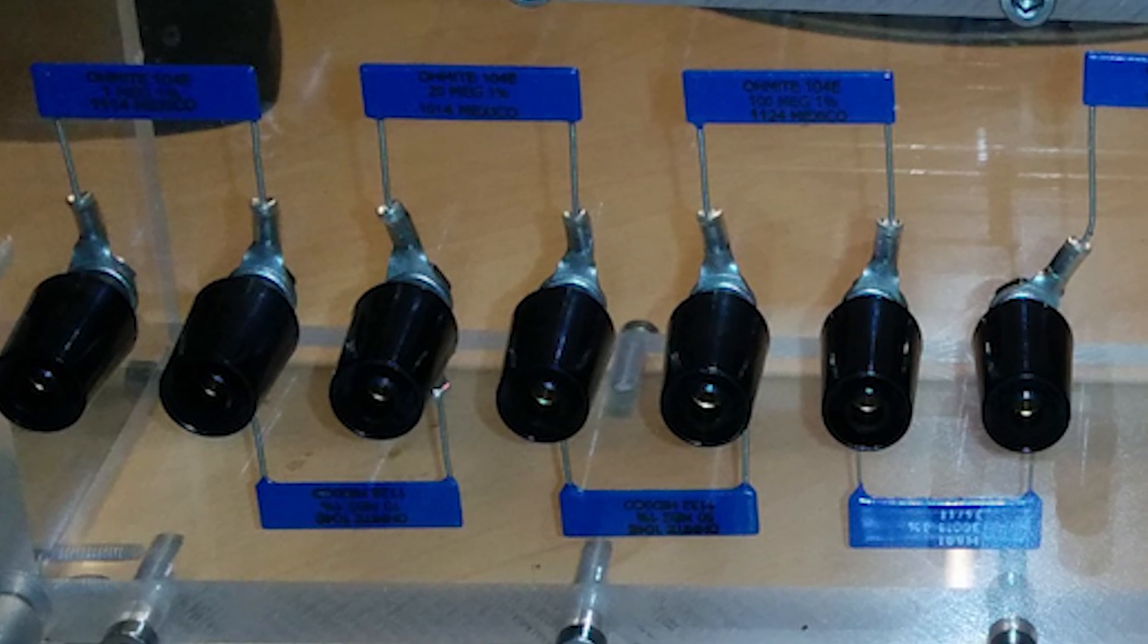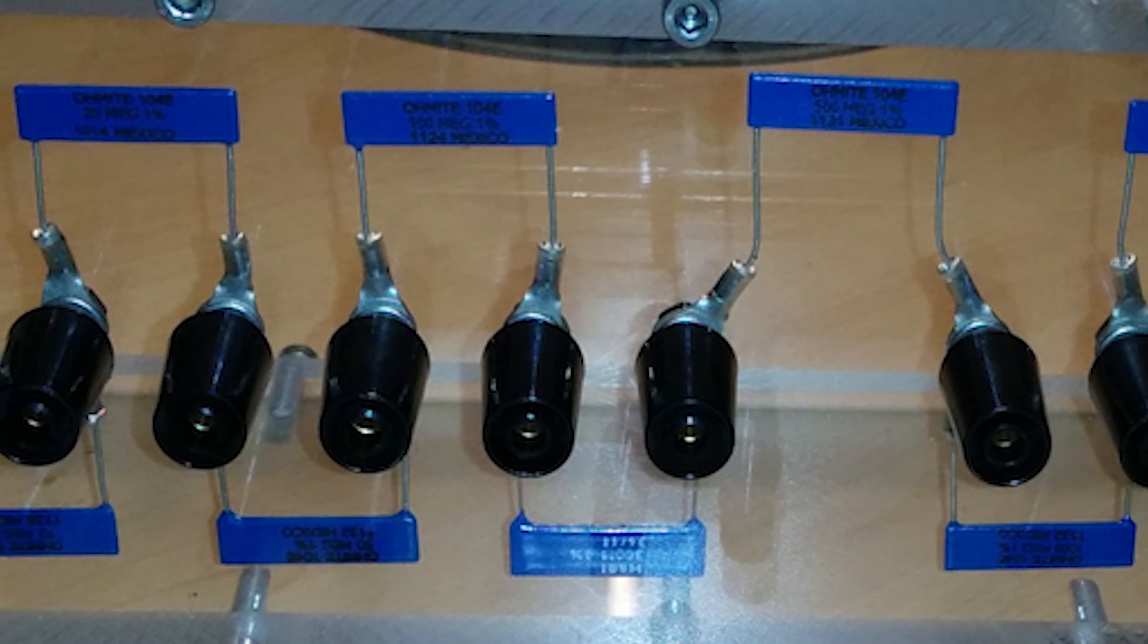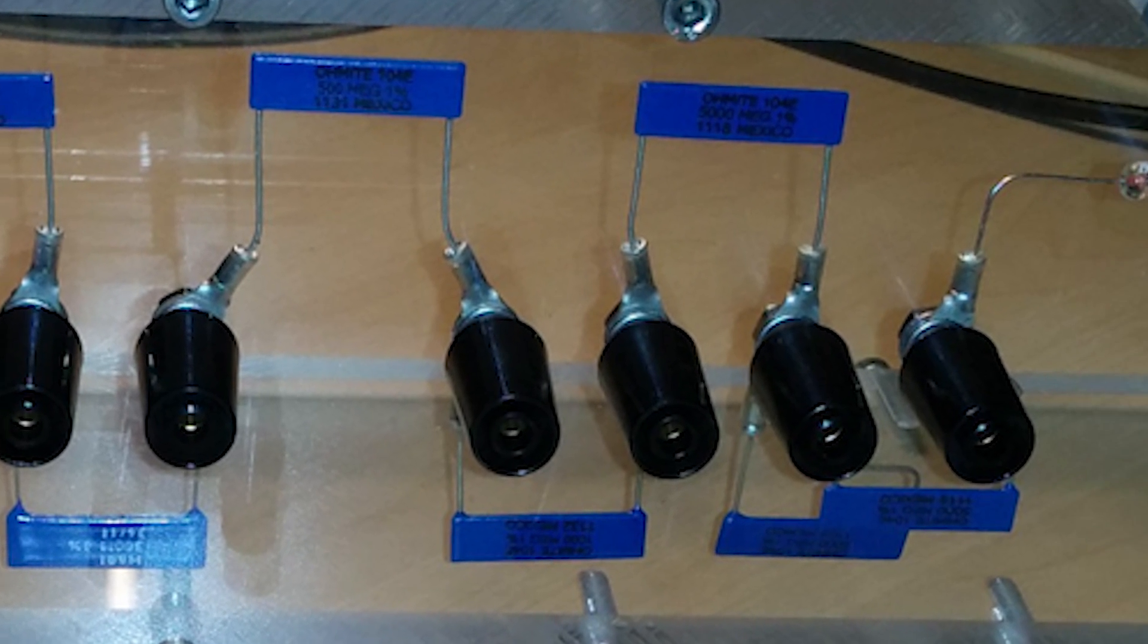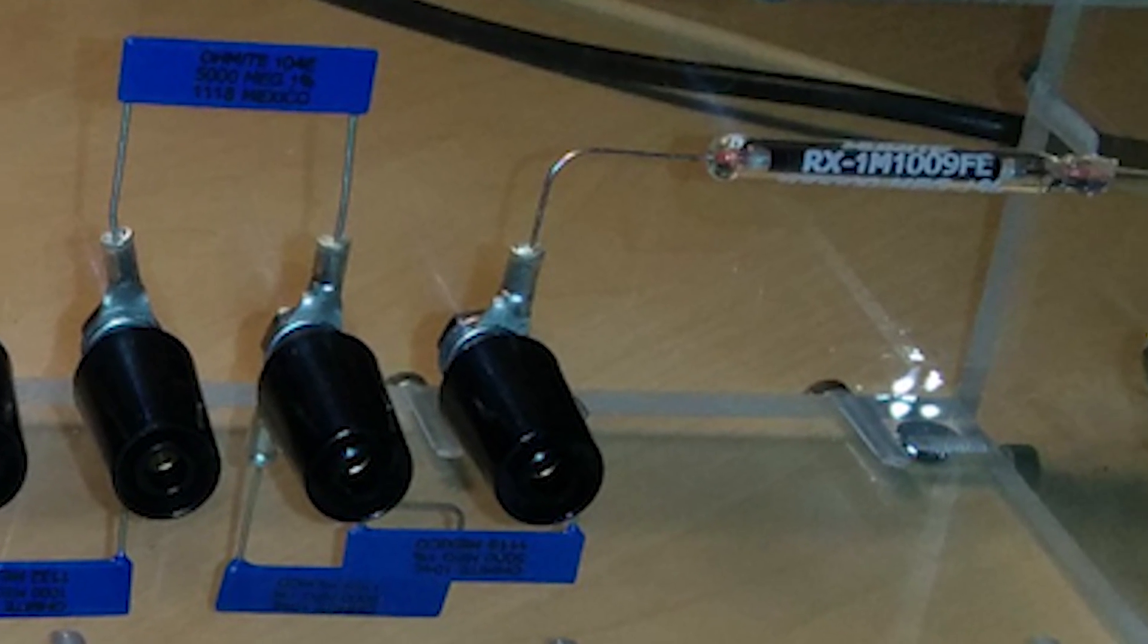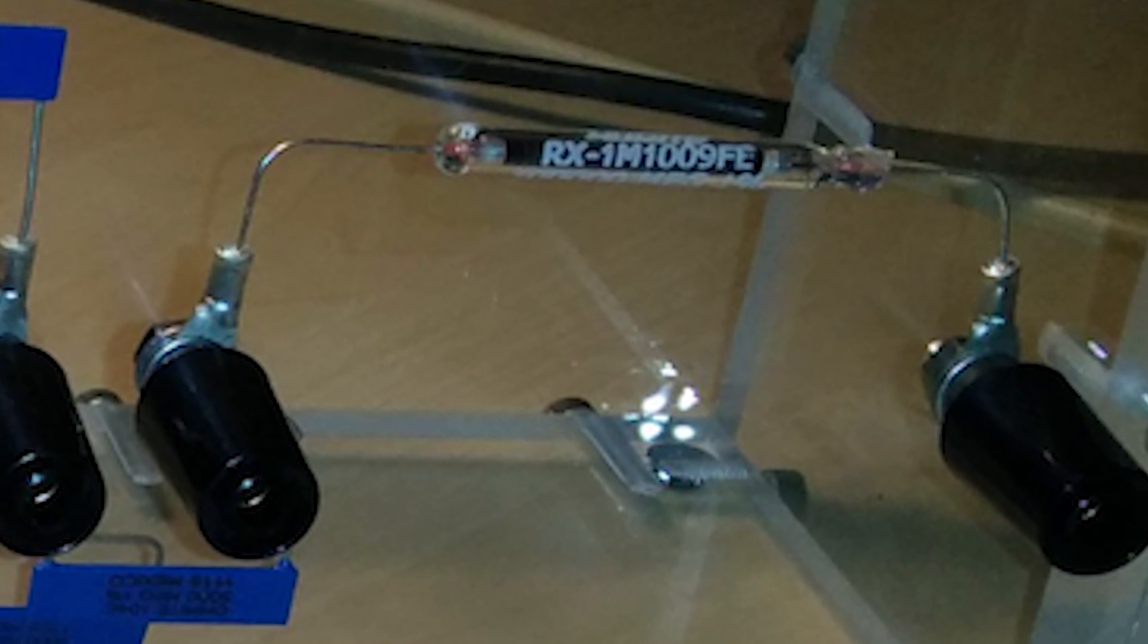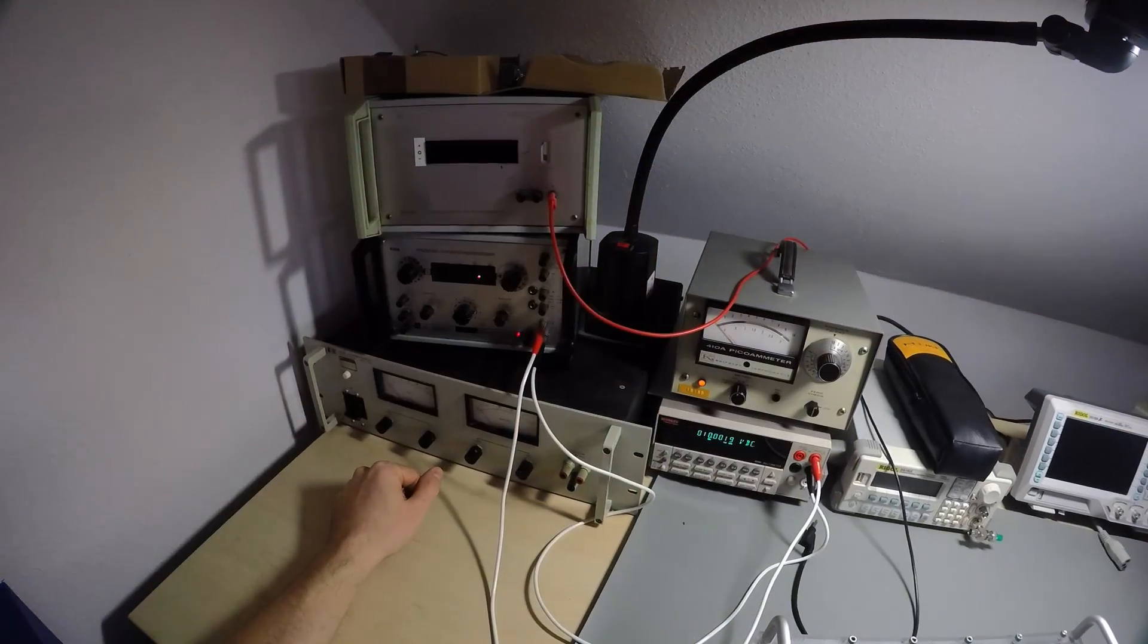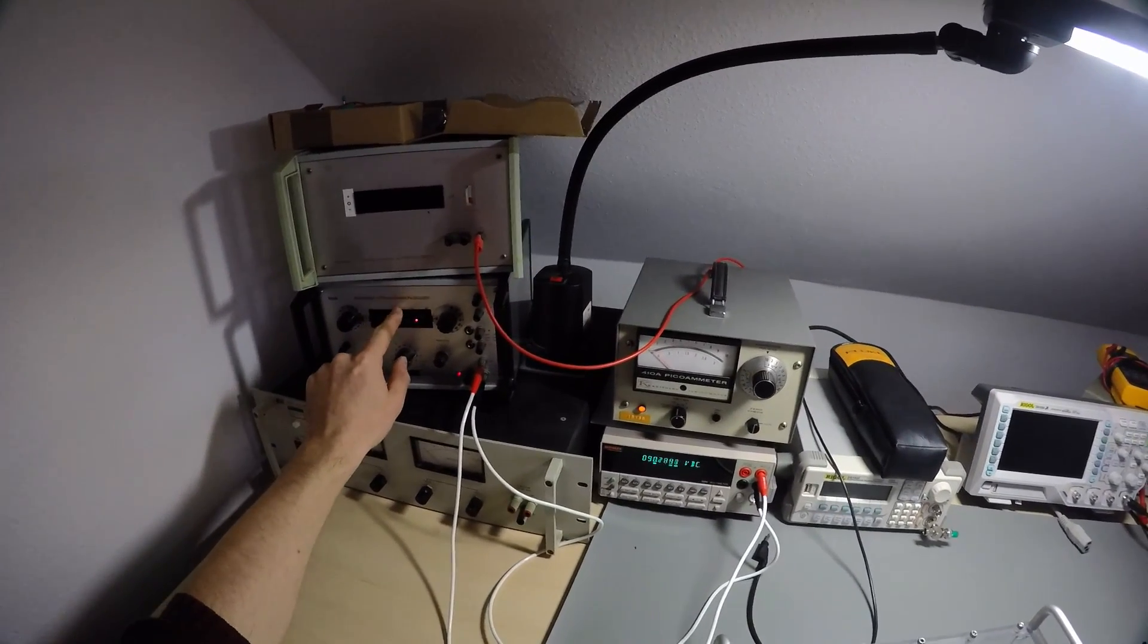The blue ones are Ohmite 1% resistors between 1M ohm and 5G ohms, they cost about six dollars each. And the crown jewel on the right is an Ohmite 1% resistor too, evacuated and glass encapsulated with an outwardly value of 100 giga ohms. That one alone costs 55 bucks. And obviously now I want to know if it has the claimed value.